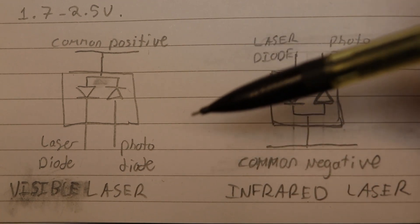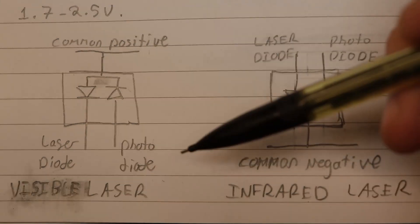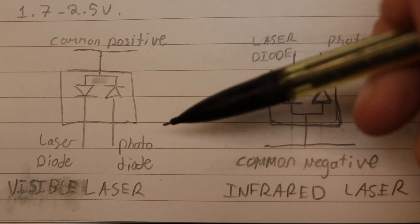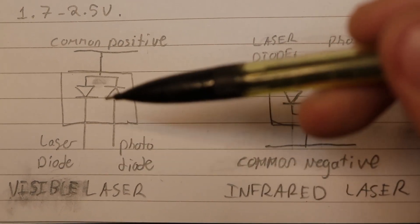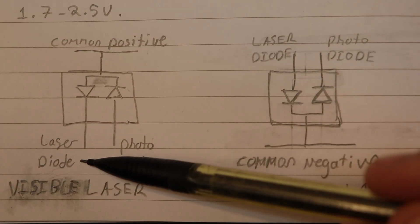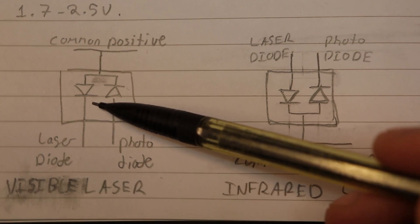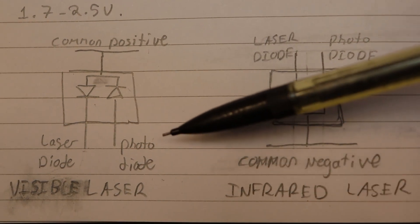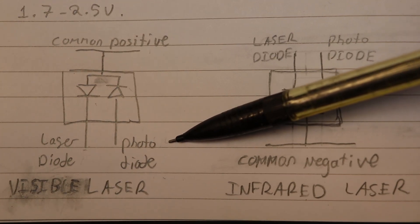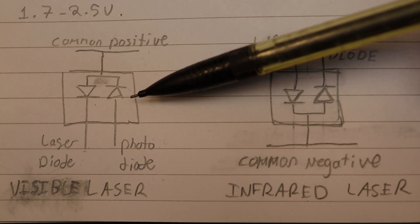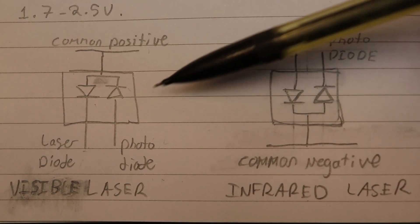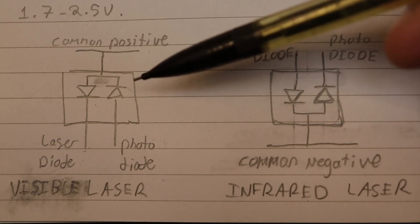And you might be wondering why is there a photo diode there? Well, to make a long explanation short, the laser diode is very sensitive. If you overvolt it or if you make it suck up too much current, well then it burns out.